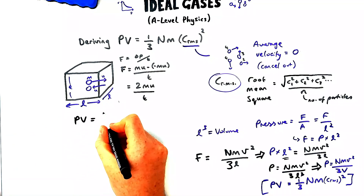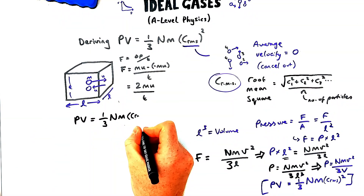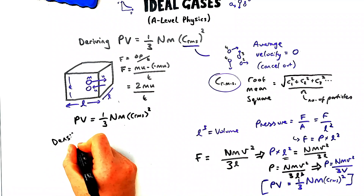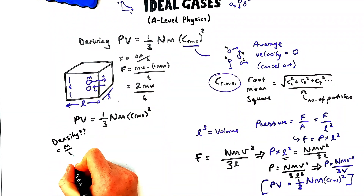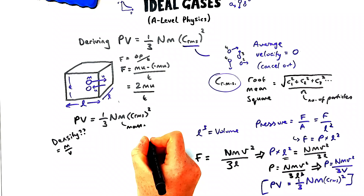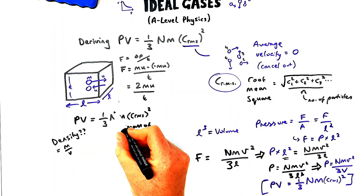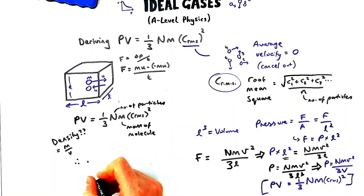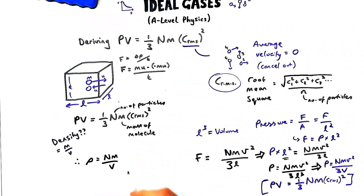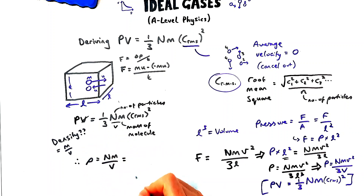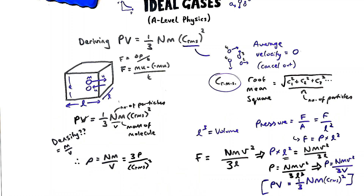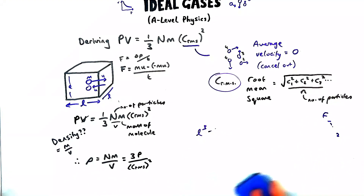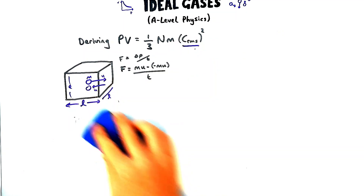Some questions can ask you to calculate the density of a gas. Since density is mass over volume, and little m is the mass of one molecule while N is the number of particles, the total mass is N times m. Bringing the volume expression to the right gives density equals mass over volume. What's remaining gives us density equals 3P divided by root mean square speed squared — so you can find the density if you're given the pressure and the speed.